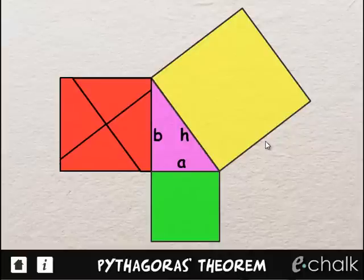Here we have another lovely geometric demonstration of Pythagoras theorem. What we've got in the middle here is our right-angled triangle and we've marked on the hypotenuse H and the other two sides A and B.